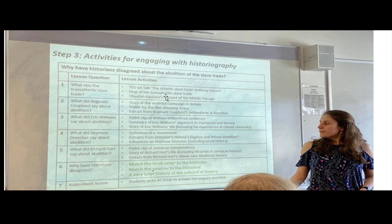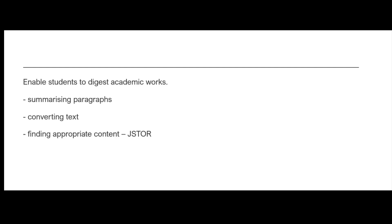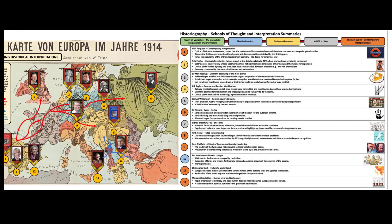There are websites where you can find academic works, like JSTOR, where students can actually work with academic sources. When looking at interpretations, it's really good to bring in the work of historians. This is an example from the causes of World War One by James Fitzgibbon — you can find him on Twitter as Mr. Fitz. This is one of his resources where he's got the historians, where they're from, and he's actually tallied them out. That's really powerful for students to see — okay, where are these opinions coming from? Why might they be coming from there? Why do they believe those particular countries caused the First World War?